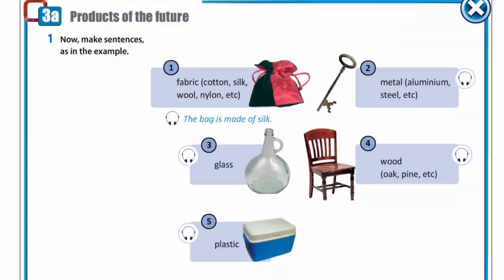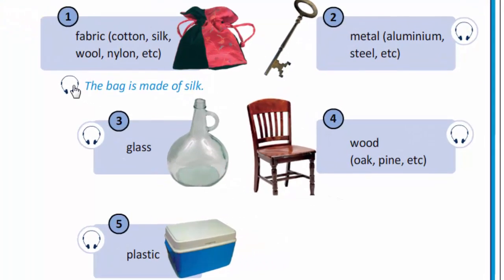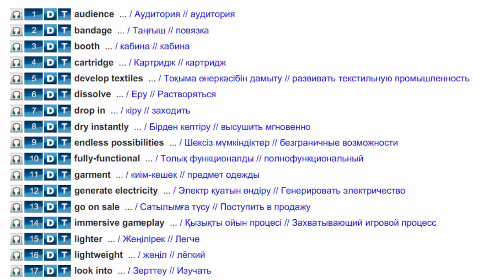Now you are to make sentences as in the example. The bag is made of silk. The key is made of metal. The bottle is made of glass. The chair is made of wood. The box is made of plastic. Let's get acquainted with new words.